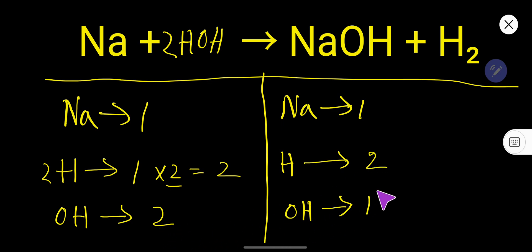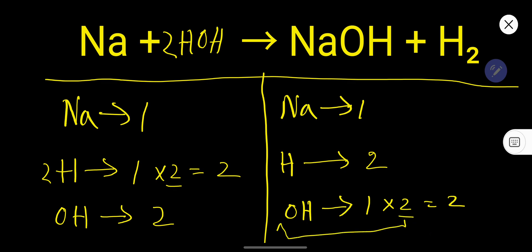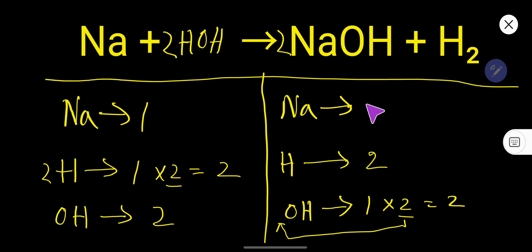Here hydroxide is 1, here 2. So to balance hydroxide, you can multiply here by 2, that gives us 2. If you multiply by something, that something must come before that atom — that is the hydroxide ion. The hydroxide ion has come from NaOH, so place 2 there. If you place 2 here, the number of sodium will be 2.